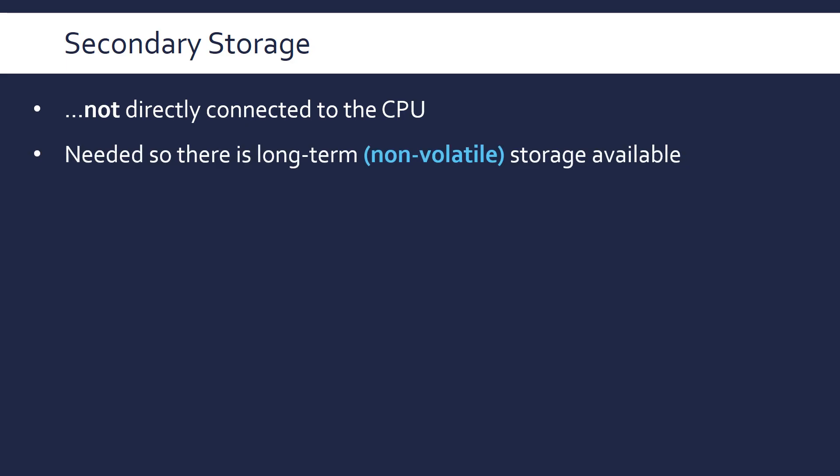You need secondary storage for long-term persistent storage — non-volatile storage — meaning the data is kept when power is turned off. You can't have a computer system without at least a connection to secondary storage. You need a permanent store of data; you can't lose your data every time you turn the computer off, because how would you turn it on again? You need a place to get your instructions from.